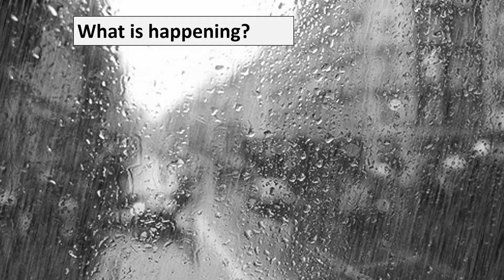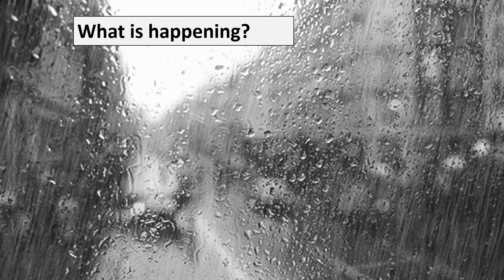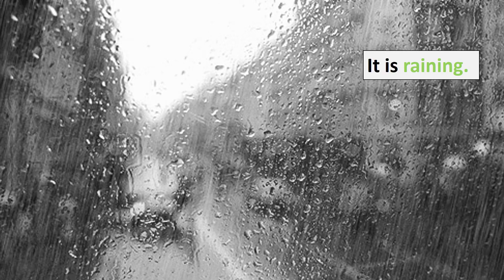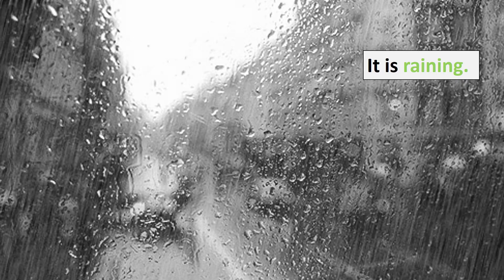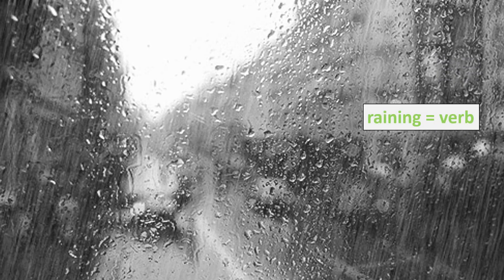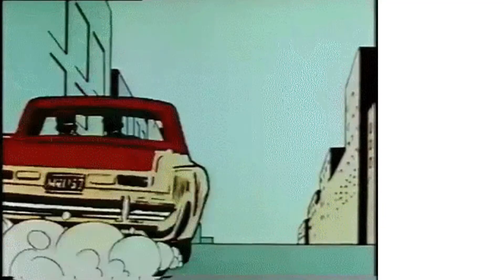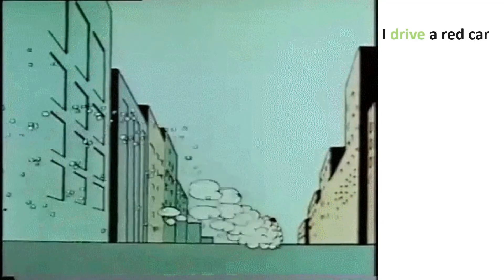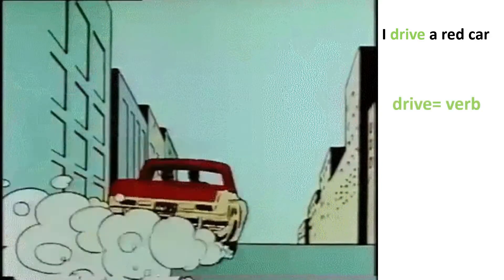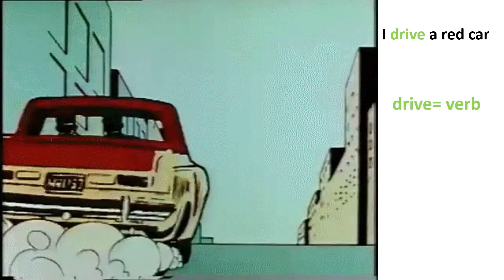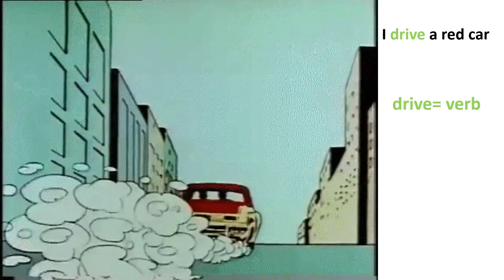What is happening? It is raining. This is an action, so raining is a verb. I drive a red car. Drive is an action, so it is a verb.